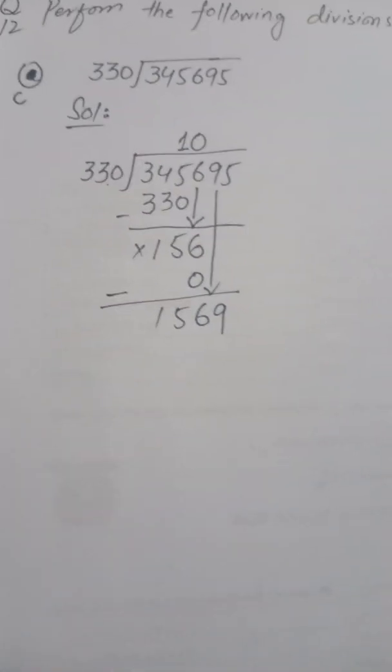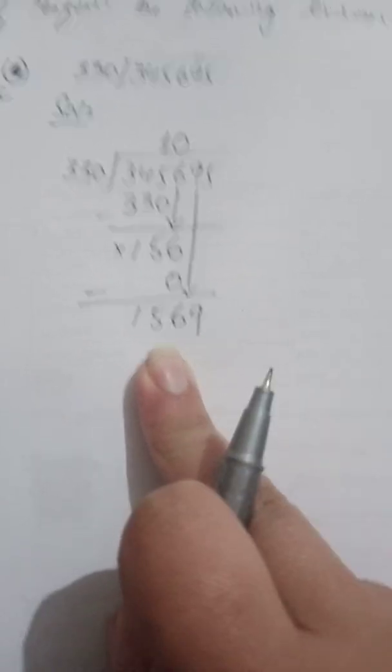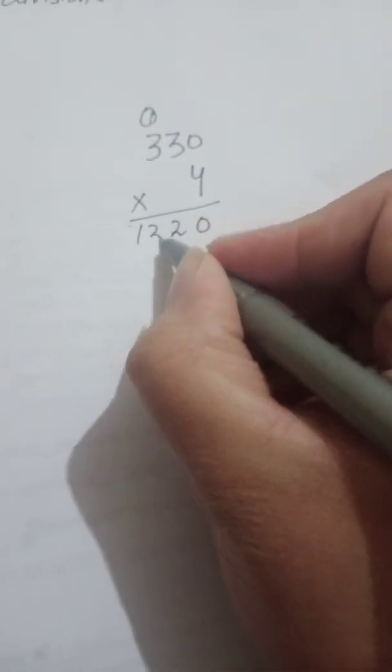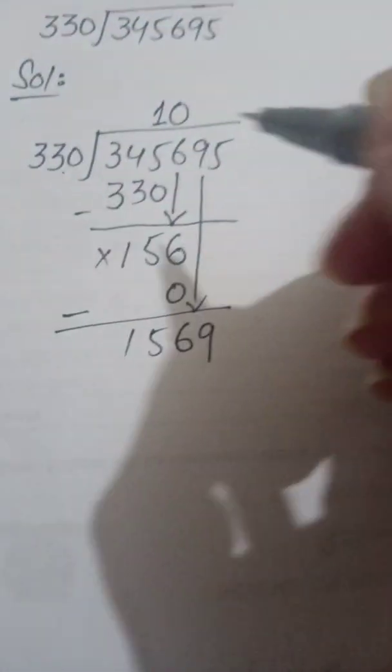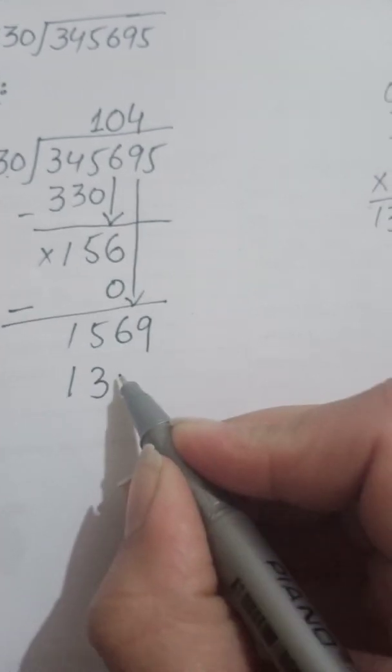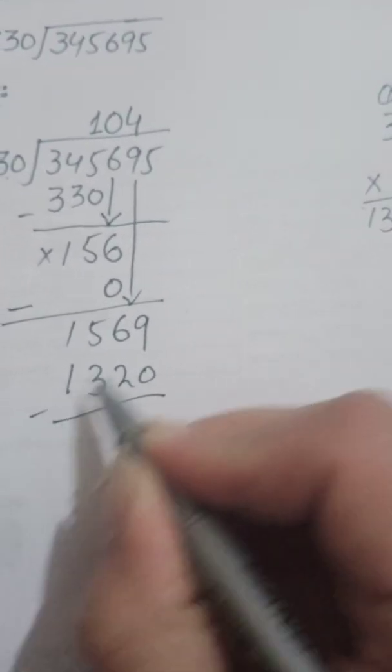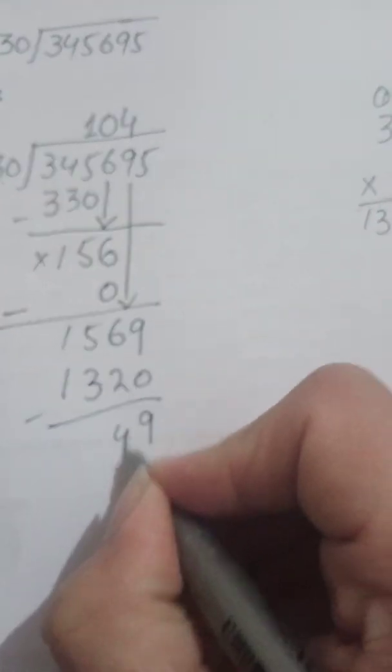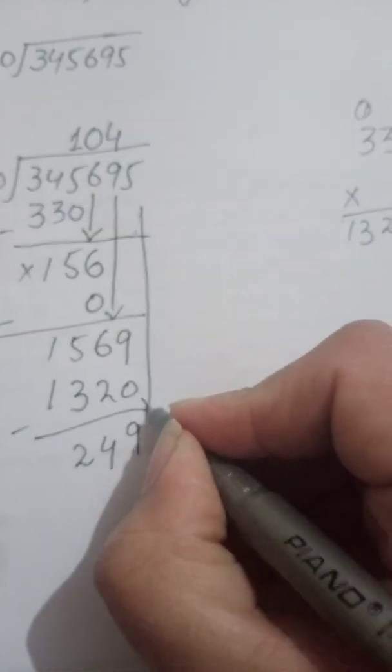Now I will find which multiple of 330 is nearest to 1,569. I check 4 times: 4×0=0, 4×3=12 carry 1, 4×3=12 plus 1 is 13. So 330×4=1,320. That is the nearest number, so I write 4 in the quotient. Product is 1,320. Subtract: 9 minus 0 is 9, 6 minus 2 is 4, 5 minus 3 is 2. Remainder is 249. Bring down next digit, which is 5.